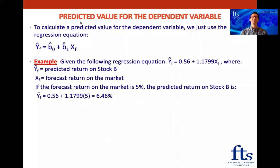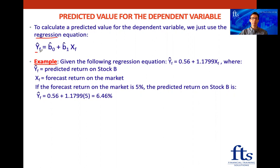Welcome back. We're on to the last class for this reading, which is fantastic news. Let's get started with something nice and easy — we've seen this before in the first class. We want to work out the predicted value for our dependent variable. All we've got to do is use our regression equation: our forecasted value equals our estimated intercept plus our estimated slope coefficient multiplied by the independent variable.